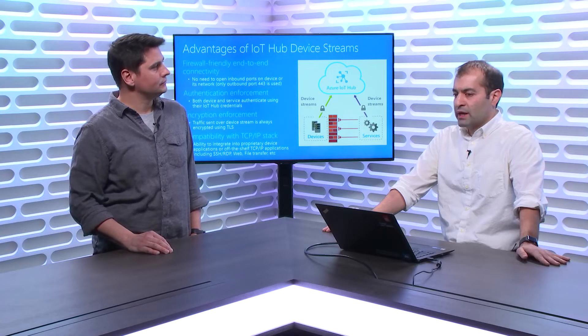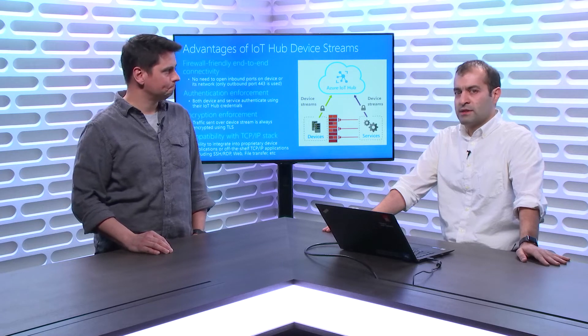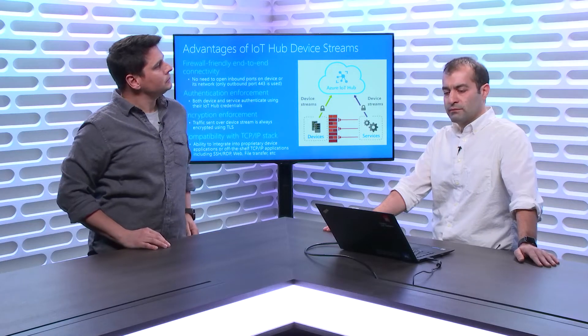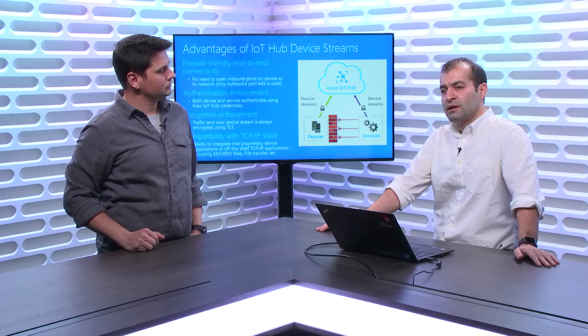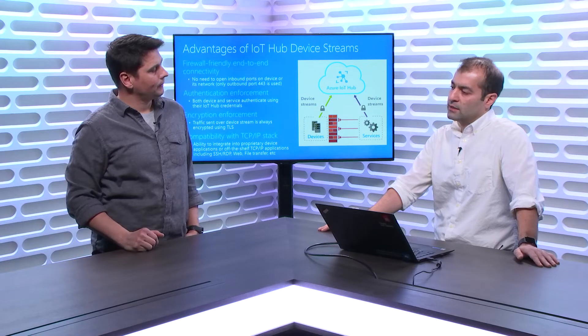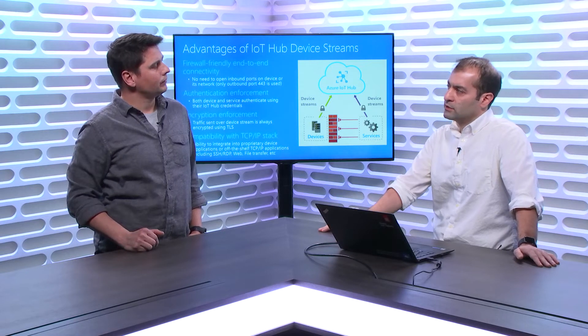The encryption stays transparent for the actual application going through the tunnel. The device side sees the bytes as sent from the service side, and vice versa. In between, the SDK takes the package, ensures authentication, encrypts the message, passes it over, and decrypts it on the other side. Traffic over these tunnels is encrypted, but once the device or service receives the byte stream, it's decrypted and handed over to the application in its original form.